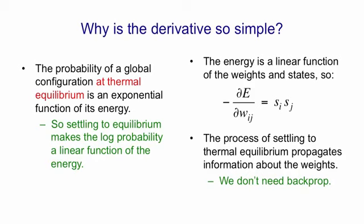We do need two stages. We need to settle with the data, and we need to settle with no data. But notice that the network's behaving in pretty much the same way in those two phases. The unit deep within the network is doing the same thing, just with different boundary conditions. With backprop, the forward pass and the backward pass are really rather different.